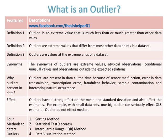Why are outliers present in data? Outliers are present in data all the time because of sensor malfunction, error in data transmission, transcription error, fraudulent behavior, sample contamination, and interesting natural occurrence. Outliers have a strong effect on the mean and standard deviation, and also affect the estimates. For example, with small data sets, one big outlier can seriously affect OLS estimates.